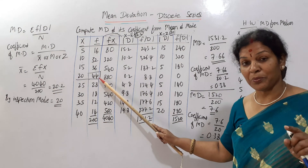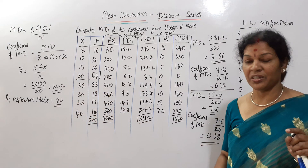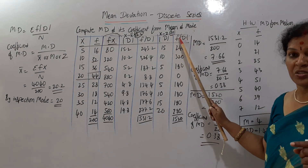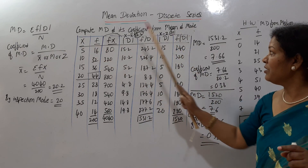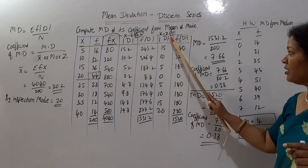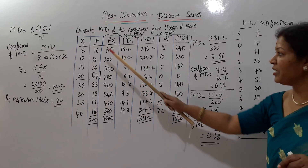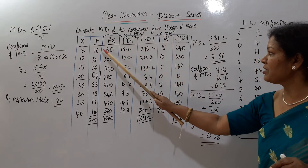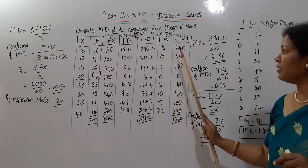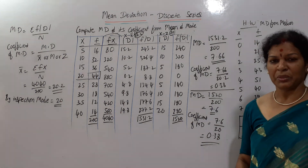Note: mode is not 44 — 44 is the frequency; mode is 20. Taking deviations from mode: x minus z, where z = 20. So 5 minus 20 = 15, 10 minus 20 = 10, and so on to get mod d. Then frequency into mod d: 16 into 15 = 240, 32 into 10 = 320. Apply in the formula — that's it.